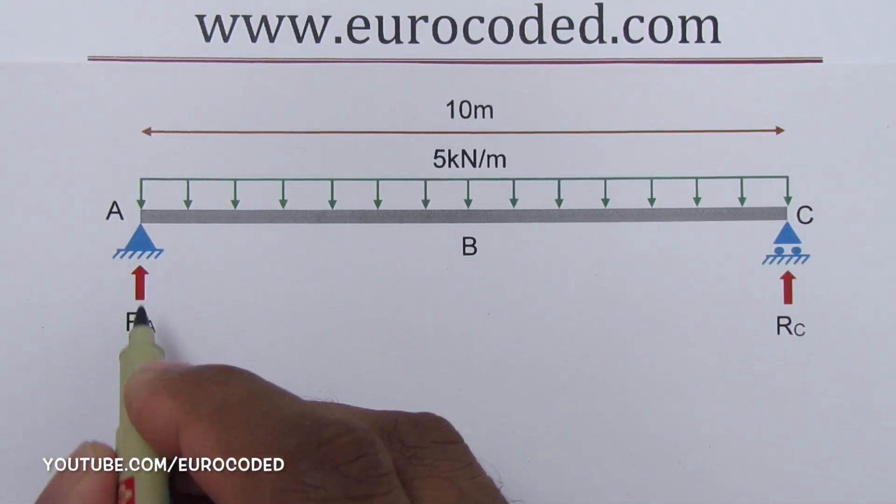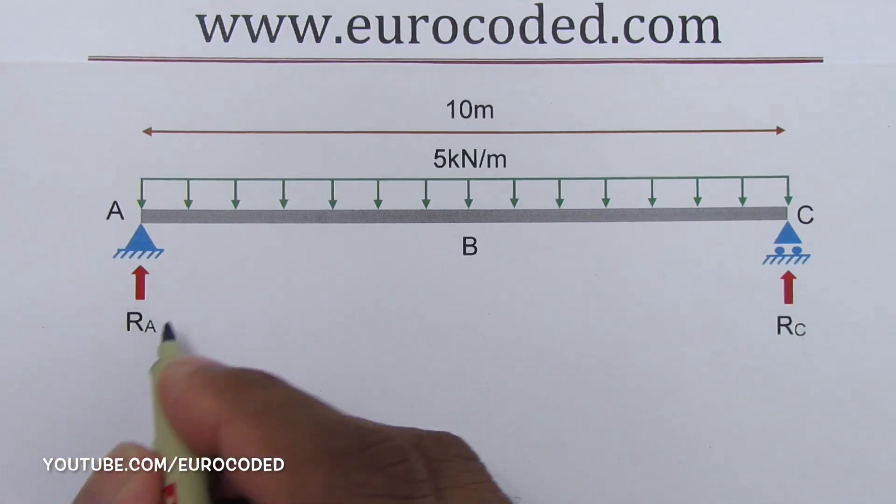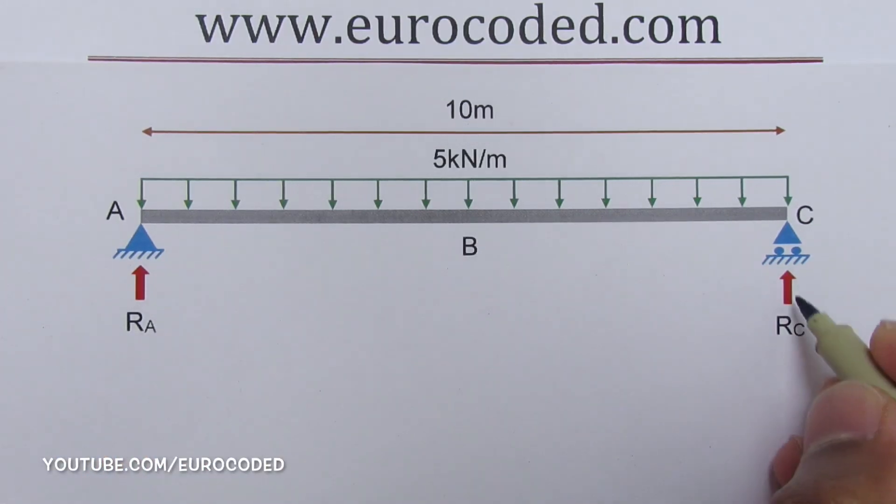I'm going to call the vertical reaction at support A RA and the vertical reaction at support C RC.